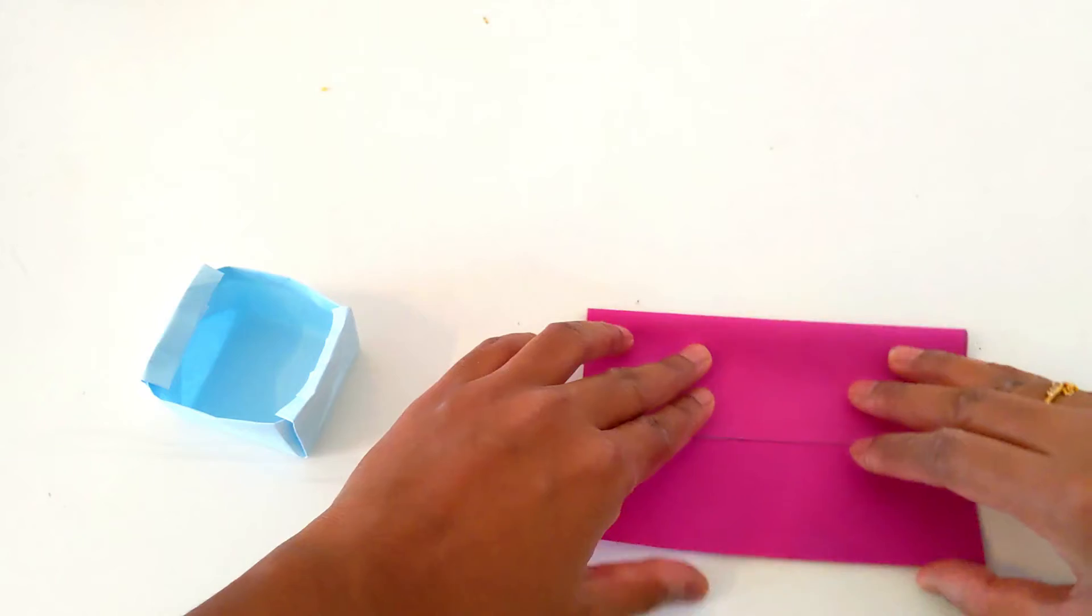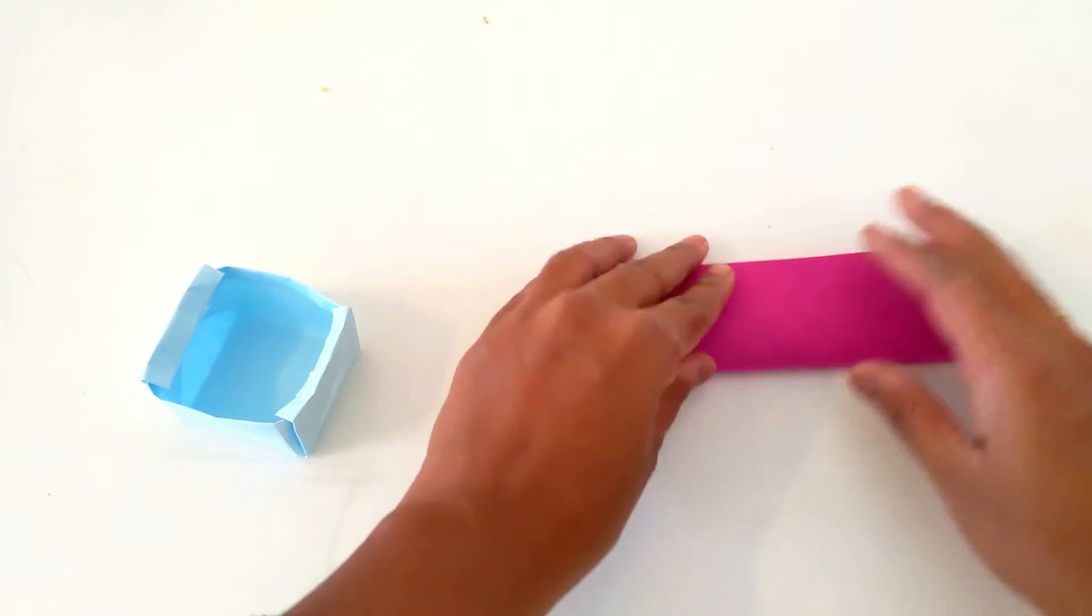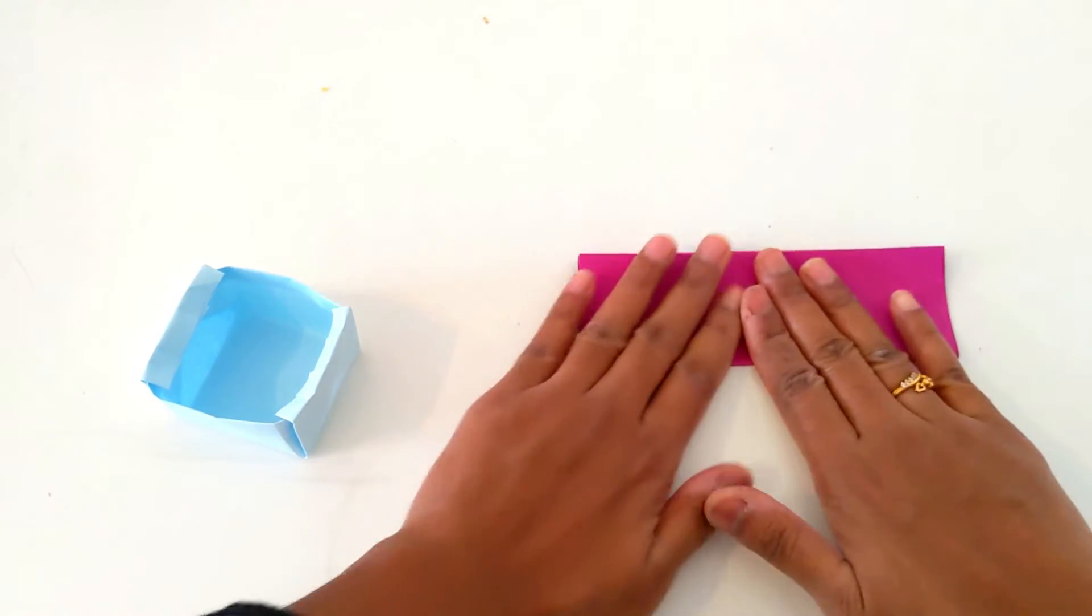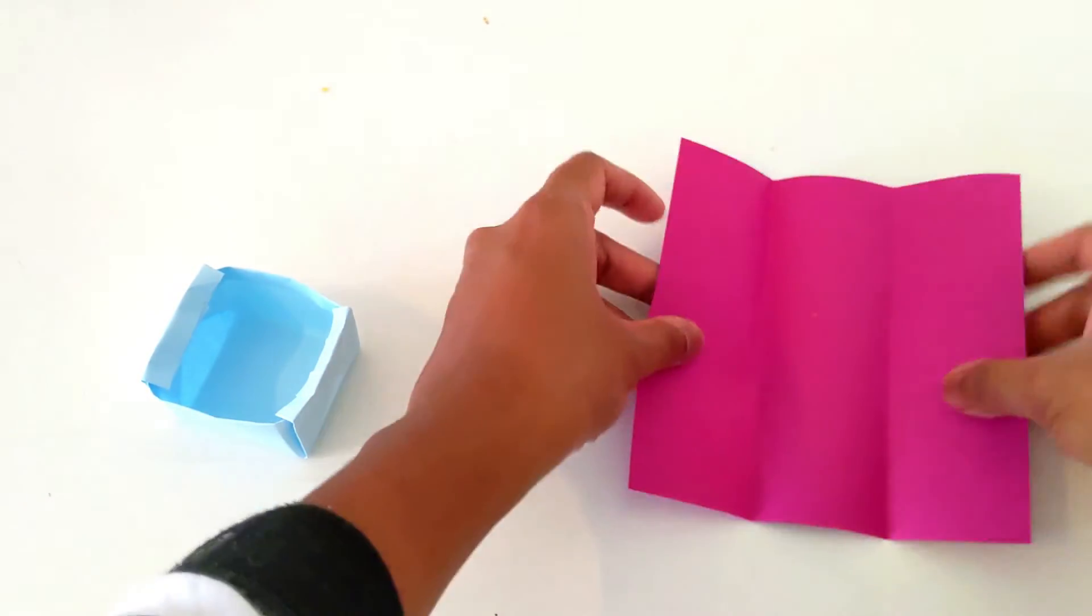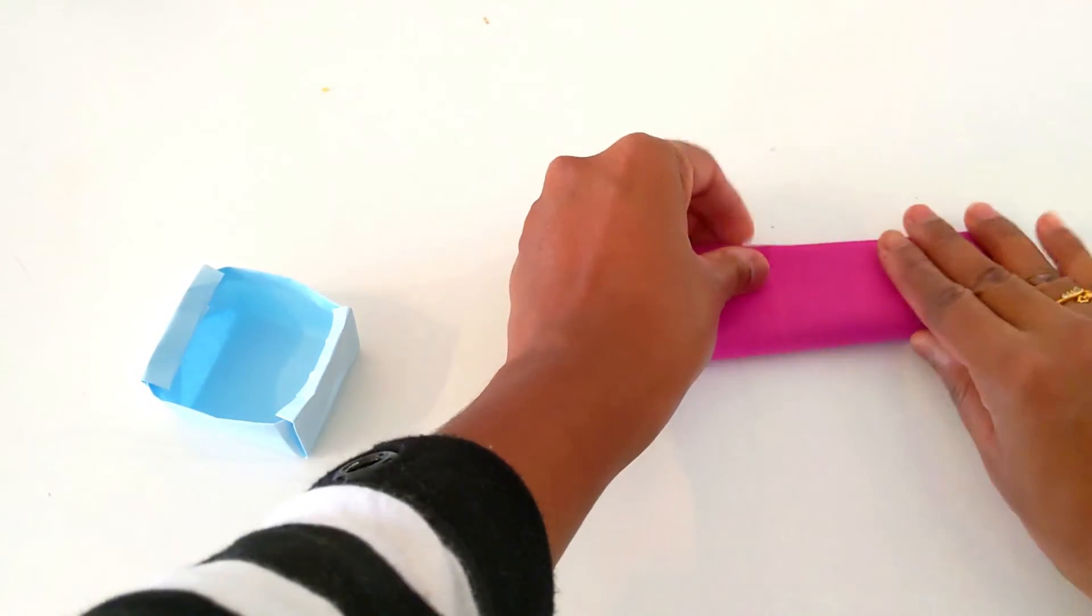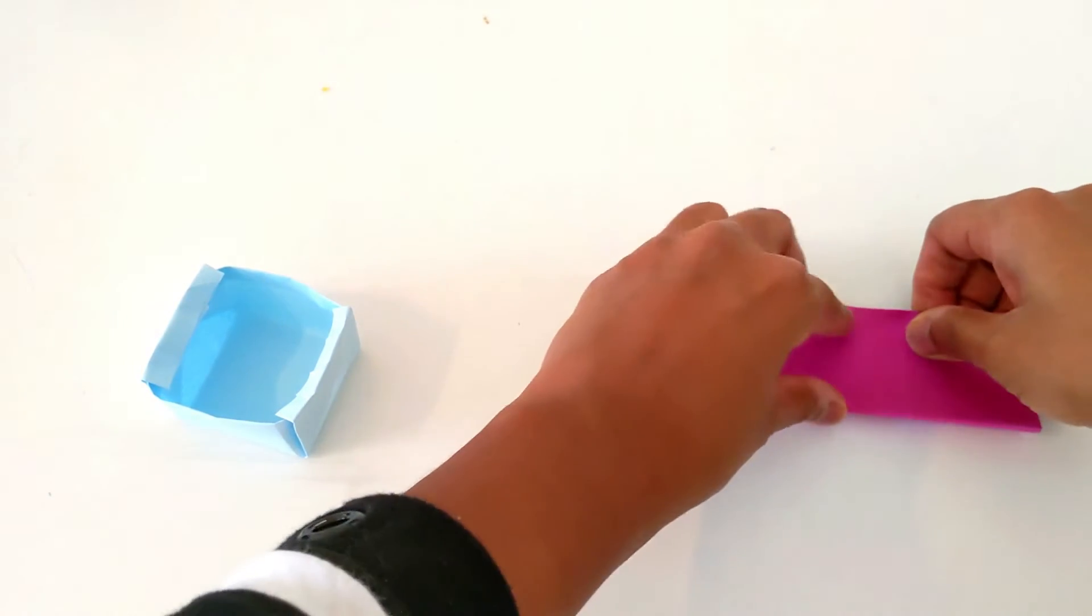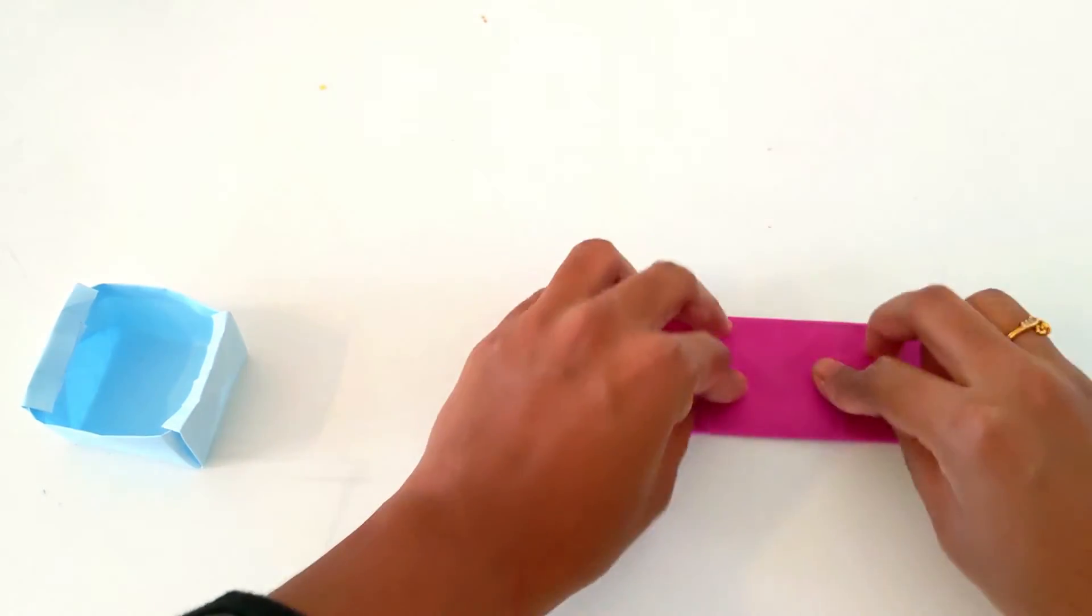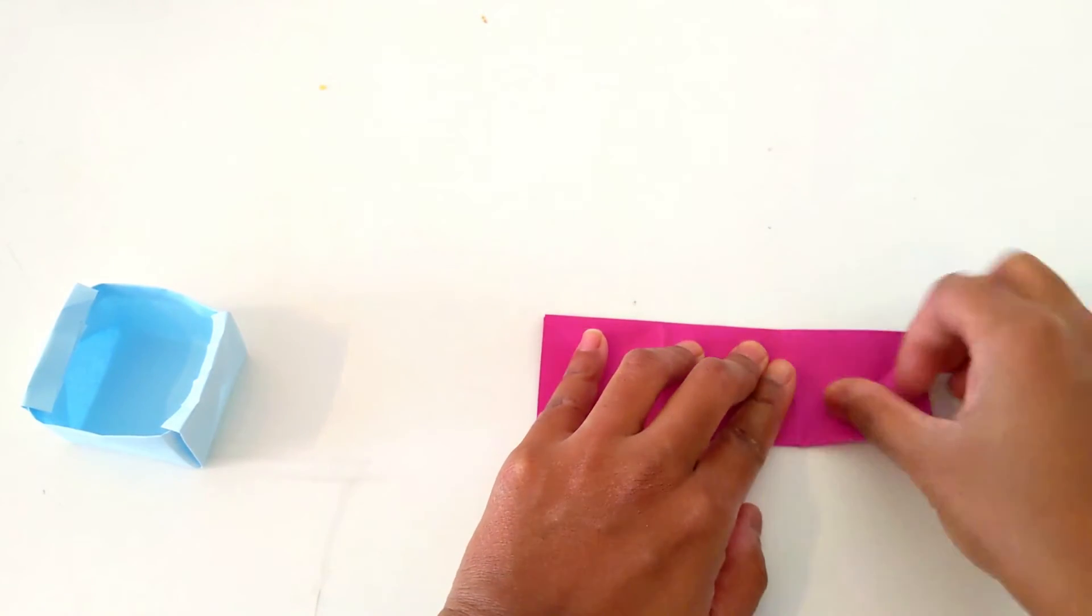First we need to fold. The same process is the same as what we have done for the box. Folding one side and the other side. Now the corners.